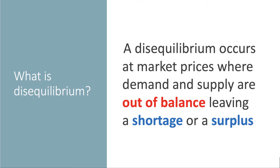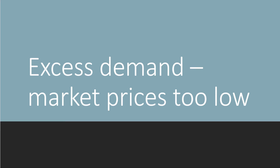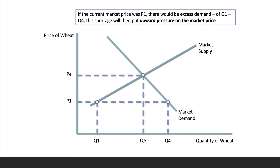Disequilibrium leaves either a shortage or a surplus. When there's excess demand, that implies that current market prices are too low. Looking at the diagram, the equilibrium price is Pe at quantity Qe. If the current market price was P1, lower than Pe, there would be excess demand equal to the distance Q1 to Q4. That shortage puts upward pressure on the market price.